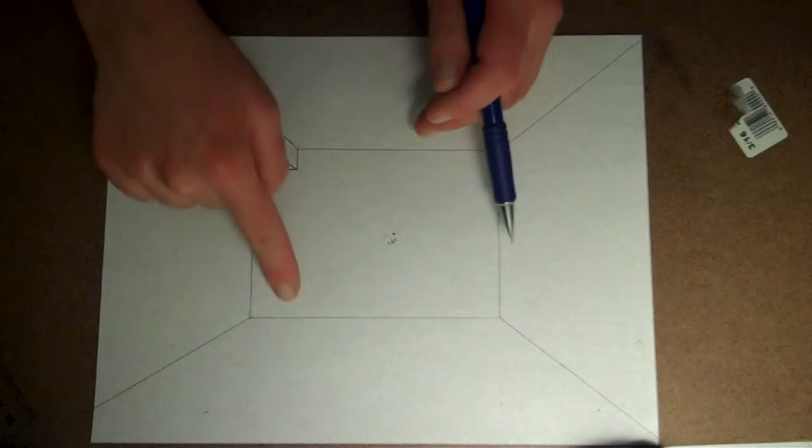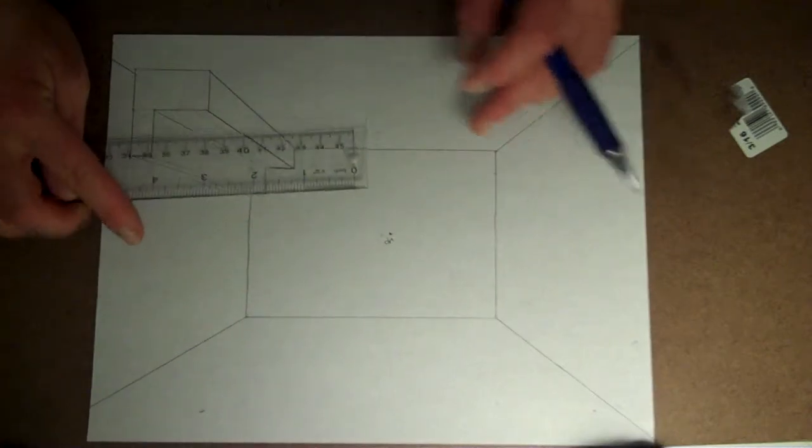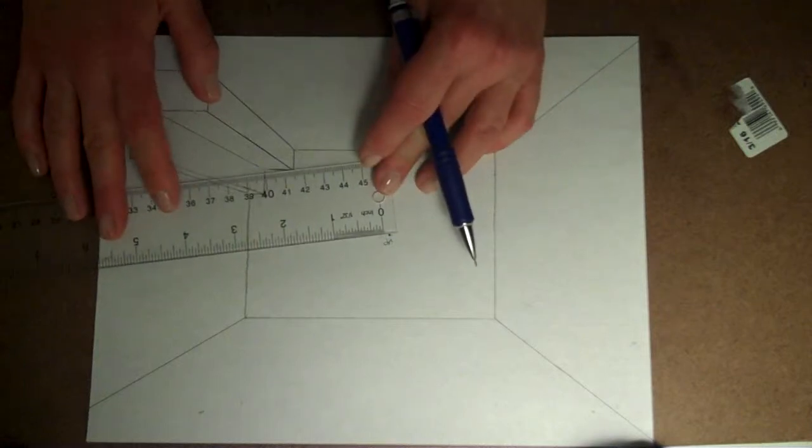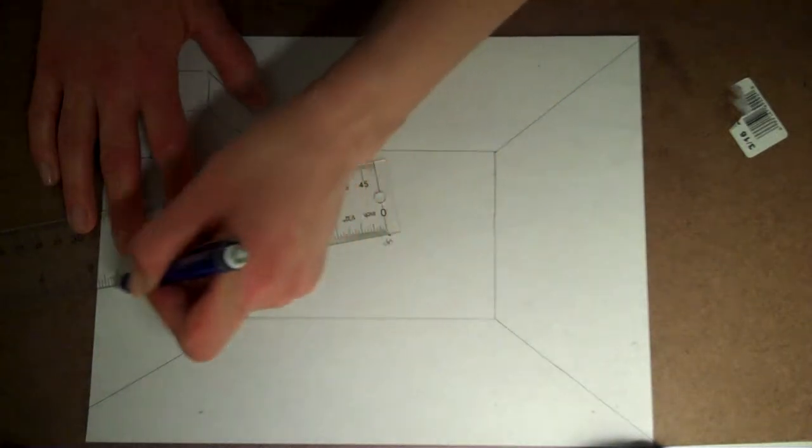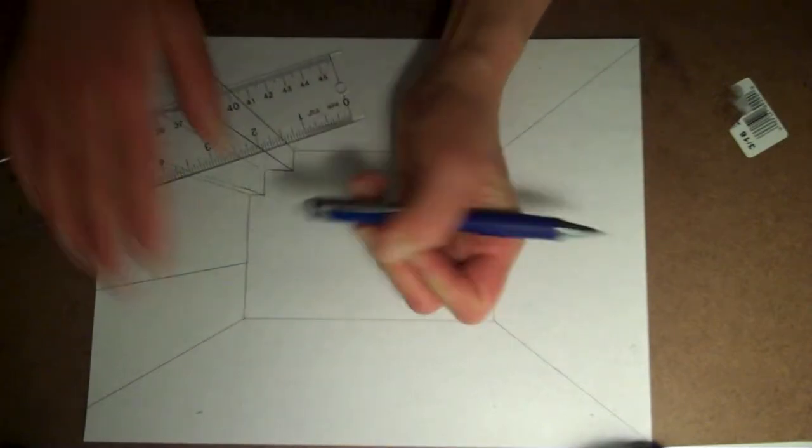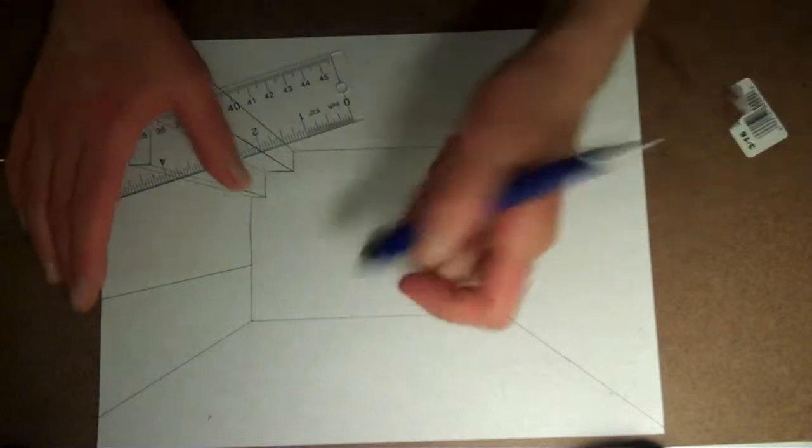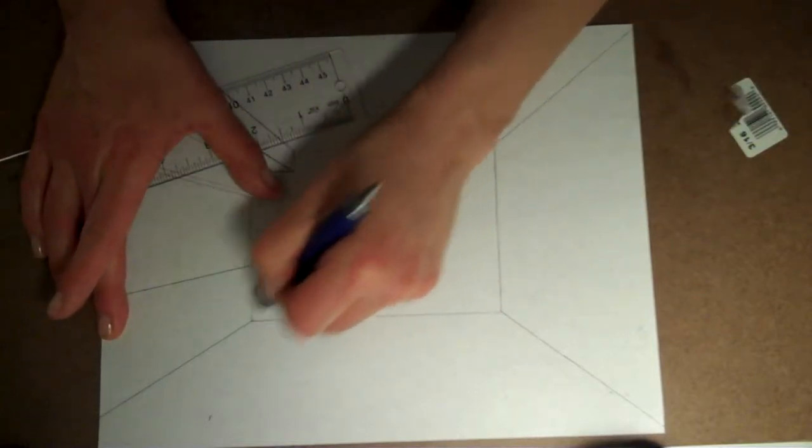To do that, you can make a line that would show where the loft would start, and this line right here could be erased because now...